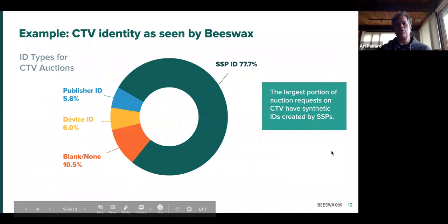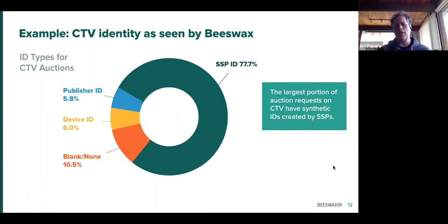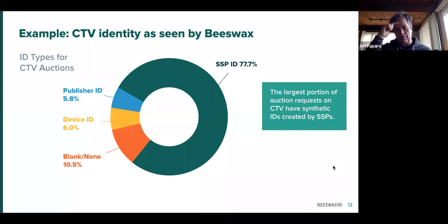I pulled up some non-scientific data — we just asked our analysts to look at what was going through Beeswax in Q1 of this year. On connected TV, which is the fastest growing area of digital advertising in the US, the ID space is very fragmented. The number one type of ID we see is a synthetic ID created by the exchange or the SSP. What this means is that there is no reliable device ID being passed. Instead, the SSP is effectively creating some sort of hash of the IP address and the publisher of the auction request, and it's sending that through as an ID that a DSP like Beeswax can use for frequency capping. But it's not really bridgeable to external data sets or to attribution.